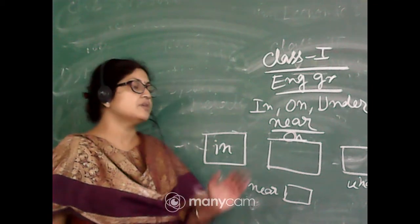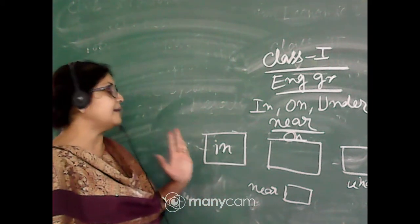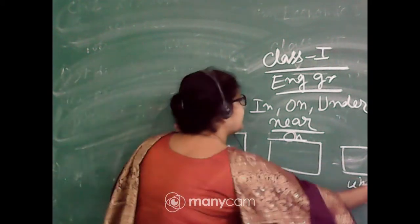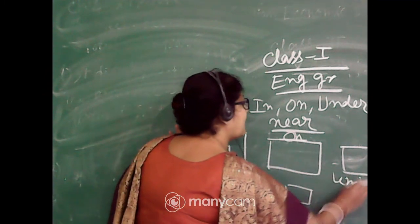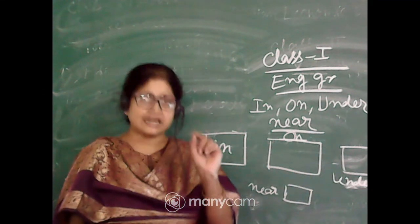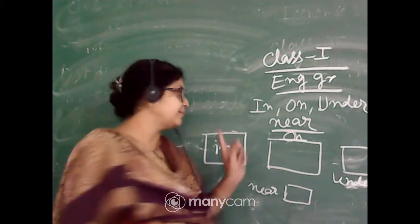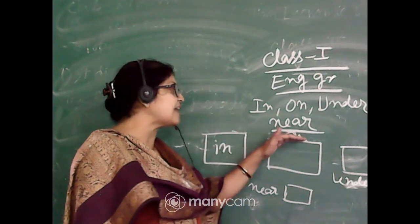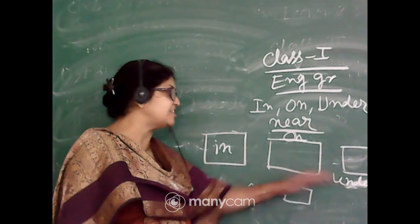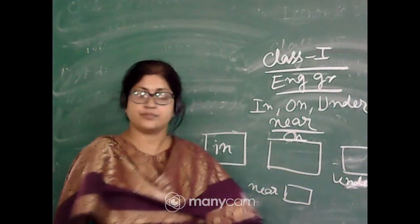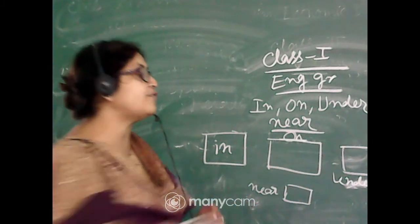Okay, so please remember the meaning. Here in Bengali I am just telling: in means vitore, on means just touch opor, under means niche, near means kachi. I am just telling only for your understanding.